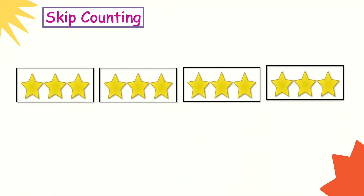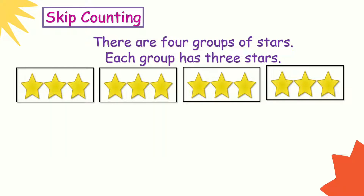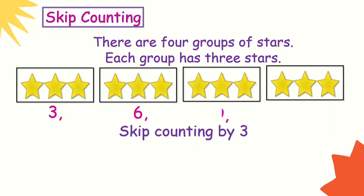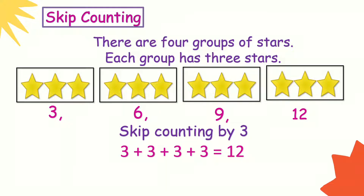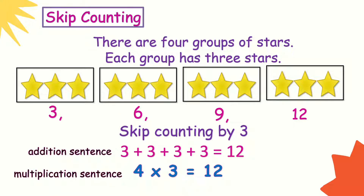Let's start first with skip counting. How many groups of stars can you see? There are 4 groups of stars, and each group has 3 stars. We can skip count by 3 to know the total: 3, 6, 9, 12. Since there are 4 groups of 3 stars, the addition sentence is 3 plus 3 plus 3 plus 3 equals 12. The multiplication sentence is 4 times 3 equals 12 — 4 is the number of groups, 3 is the number of stars in each group, and the total is 12.